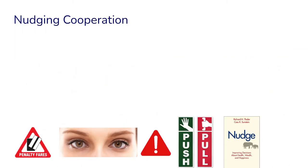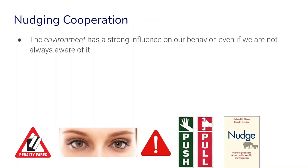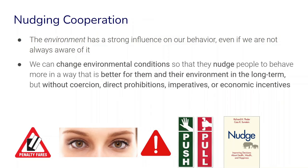A final topic you can explore this week is the idea of nudging. Nudging is based on the idea that the environment and environmental factors have a strong influence on our behavior, even if we are not always aware of it — we are often reacting to our environment in an unconscious way. Behavioral economists found that we can change environmental conditions slightly to nudge people to behave more in a way that is better for them and their environment in the long term, but without coercion, without forcing anybody, without direct prohibitions or imperatives or economic incentives like giving them money.